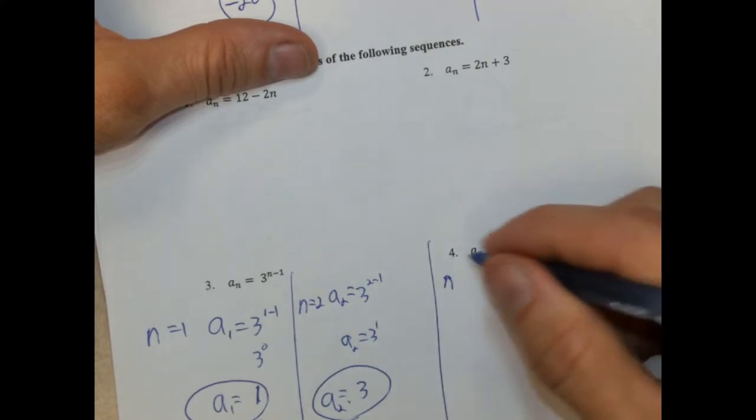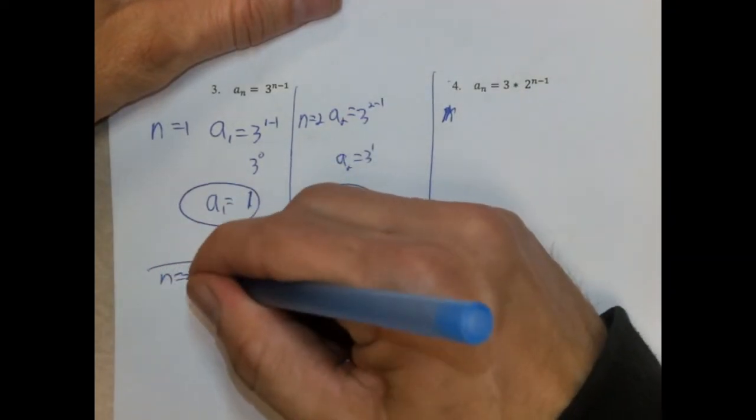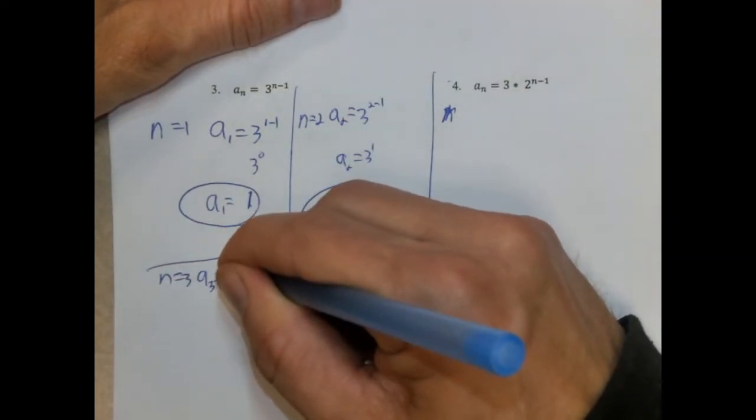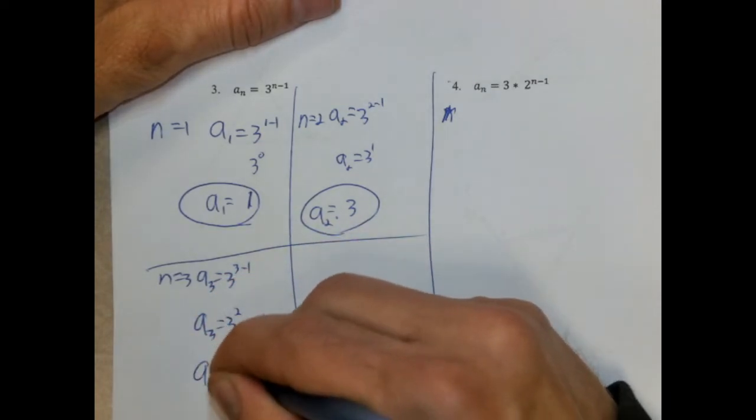And when n is 3, right down here so you can see it. When n is 3, a_3 equals 3 to the 3 minus 1. a_3 equals 3 to the 2nd power, so a_3 equals 9.